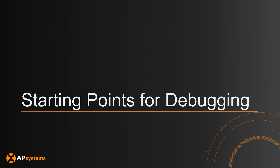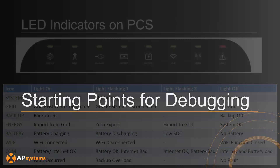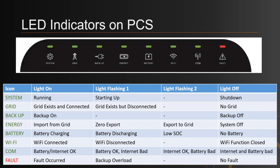Things may not always go smoothly, so here are some tips for debugging the system. The first line of defense is the LED indicators on the PCS. For the System icon: solid light means the system is running; flashing means it is booting up; off means the PCS is off.